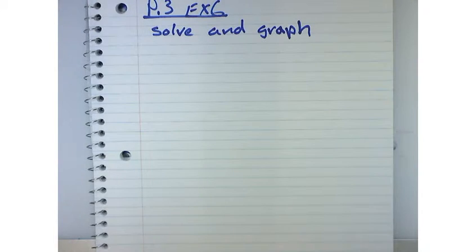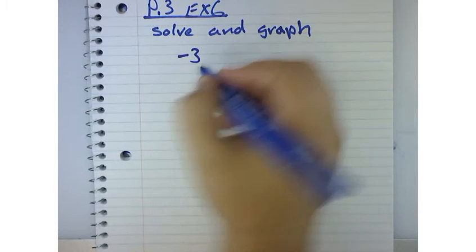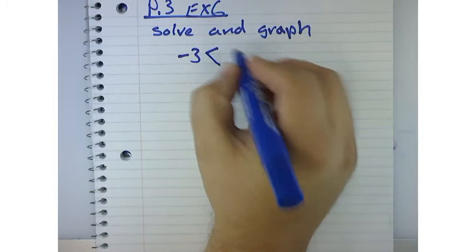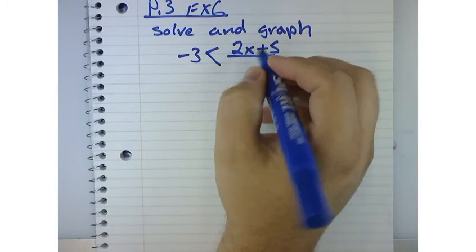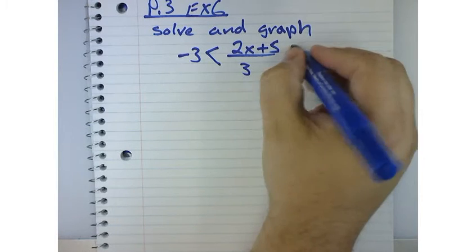And so for this particular one, we have negative 3 is less than 2x plus 5 all over 3, less than or equal to 5.